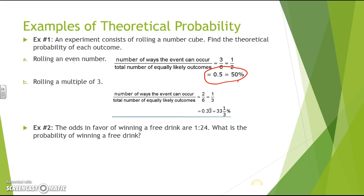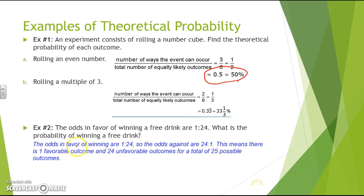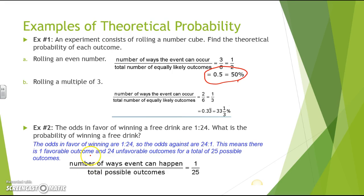Example two: the odds in favor of winning a free drink are 1 to 24. The odds against are 24 to 1, meaning there is 1 favorable outcome and 24 unfavorable outcomes, for a total of 25 possible outcomes (1 + 24 = 25). So the theoretical probability of winning a free drink is 1 out of 25.